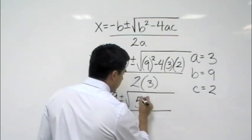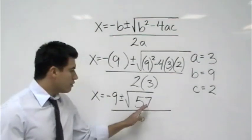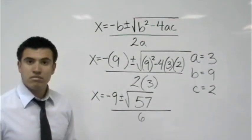So now you put that in there. And now, can you take the square root of 57? No. Can you break down 57? No, you cannot.